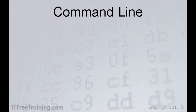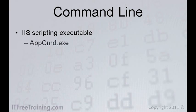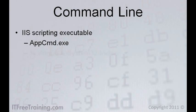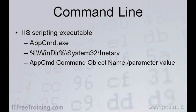The administration console supplied with IIS is very simple to use and very powerful. You can perform the same commands from the command line using the executable appcmd.exe, located in the inetSRV directory under System32 under your Windows directory. The basic syntax of the command is: the command, the object you wish to work on, the name of the object, and lastly the parameter and the value you wish to set it to.